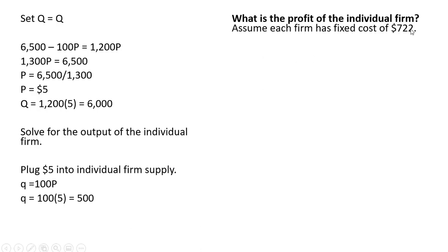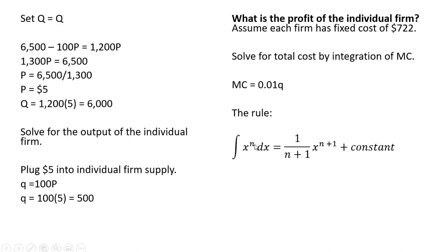What is the profit of the individual firm? Let's assume each firm has a fixed cost of $722. We want to solve for the total cost by integration of the marginal cost equation. So we're going to take the antiderivative of the marginal cost equation. That's our marginal cost equation for the individual firm. So the rule here to take the integral of that is as follows. So x raised to the power of n. Here our x is q and it's just raised to the power of 1. You do the following.